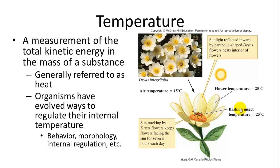They may be going through some chemical reactions on the inside of their bodies to internally regulate their temperature. Structurally, these flowers reflect sunlight to the interior of their flower, which attracts insects there. Those insects are then attracted there and help to pollinate the flower.